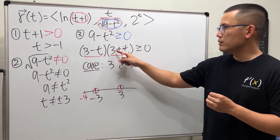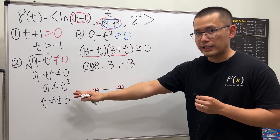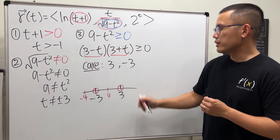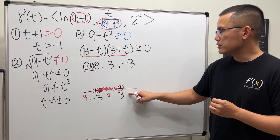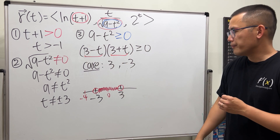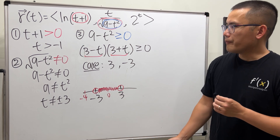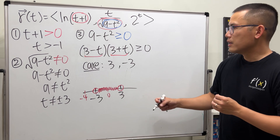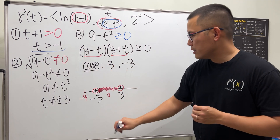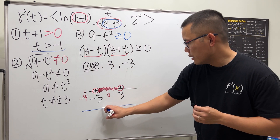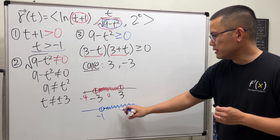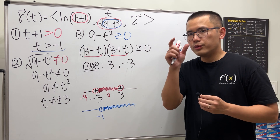Let's test negative four: three minus negative four is seven, and three plus negative four is negative one, so the product is negative — we don't want that. Test zero between negative three and three: we get nine, which is greater than zero, so we want that interval. Test a number greater than three, like 17: the first factor is negative, the second is positive, so the product is negative — we don't want that. So we want the middle interval from negative three to three.